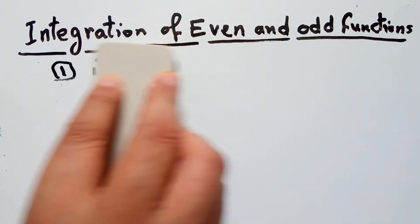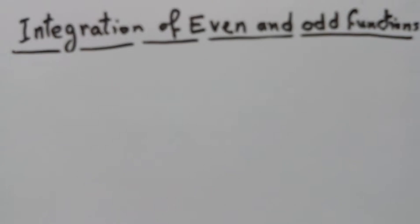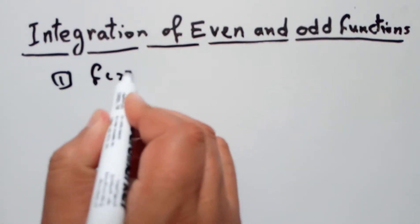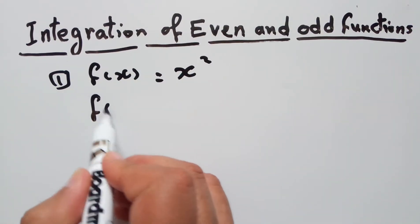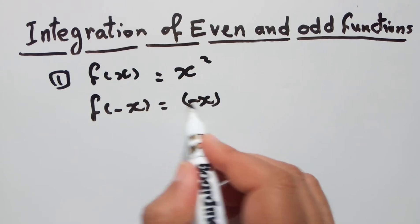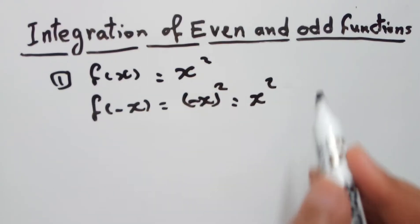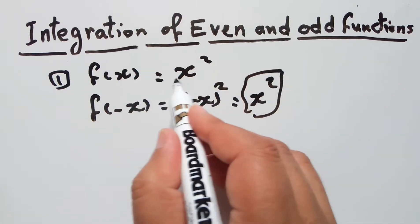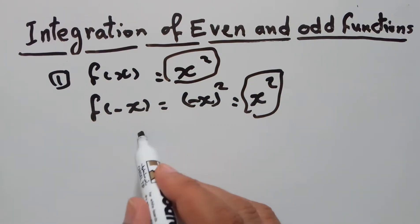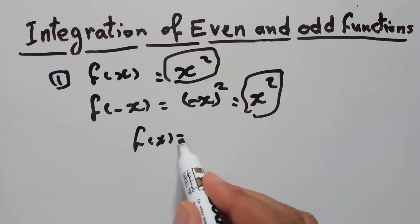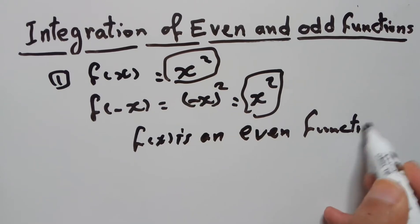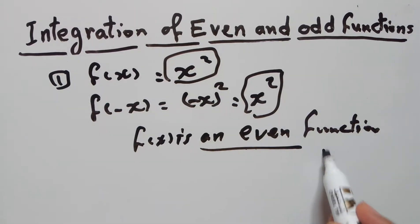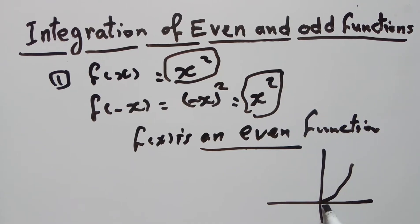A simple example: number one, f(x) = x². If you replace x with -x, you get (-x)² which equals positive x². You get the same function, so f(-x) = f(x), which means f(x) = x² is an even function.